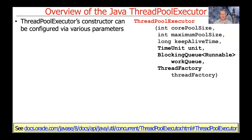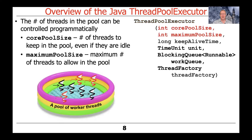ThreadPoolExecutor is really configurable — there are about a half dozen different properties that you can control when you create an instance of it. In practice, you don't typically create ThreadPoolExecutor instances directly; instead, you create them through the executors factory methods like new fixed thread pool and new cached thread pool. We'll talk more about that later.